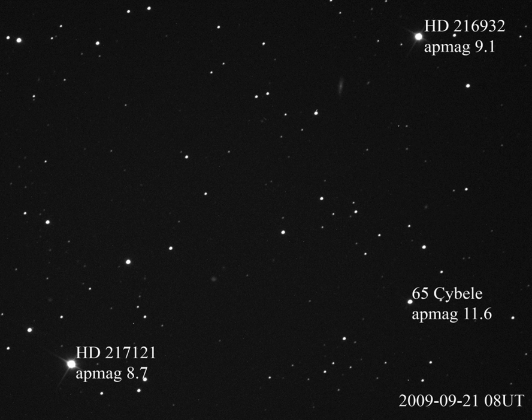The zero point of Pogson's scale was originally defined by assigning Polaris a magnitude of exactly 2. Astronomers later discovered that Polaris is slightly variable, so they switched to Vega as the standard reference star, assigning the brightness of Vega as the definition of zero magnitude at any specified wavelength. Apart from small corrections, the brightness of Vega still serves as the definition of zero magnitude for visible and near-infrared wavelengths, where its spectral energy distribution closely approximates that of a black body at a temperature of 11,000 K.